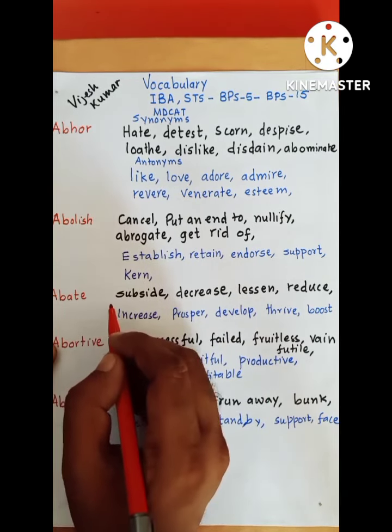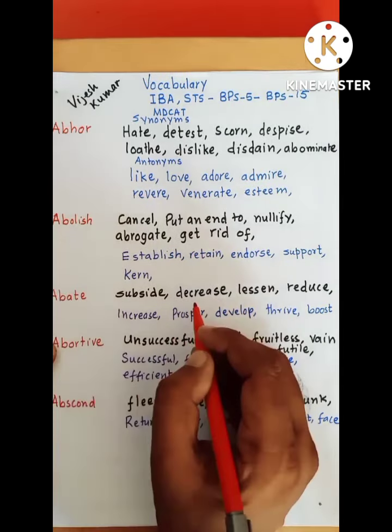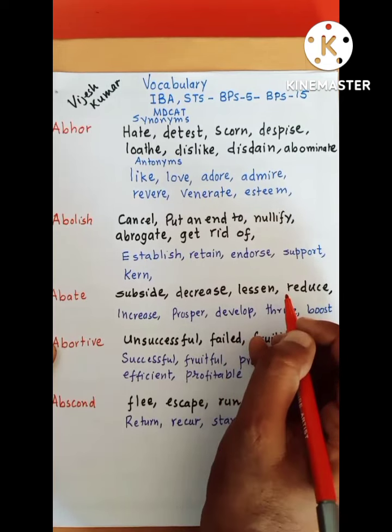Abate means subside. As we know that the government gives subsidy. It means to decrease something, lessen something, reduce something.